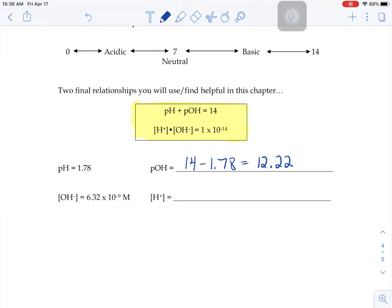And then if you know your H+ and OH-, they're always going to multiply together to give you a value of 1 times 10 to the negative 14. So if we knew our OH- concentration was 6.32 times 10 to the negative 9th, we could divide 1 times 10 to the negative 14th by 6.32 times 10 to the negative 9th to find the H+ concentration.